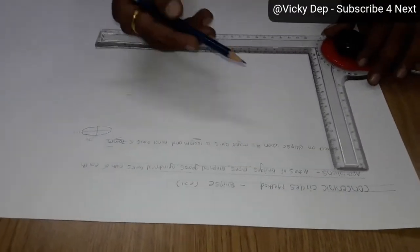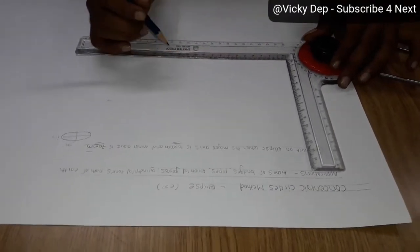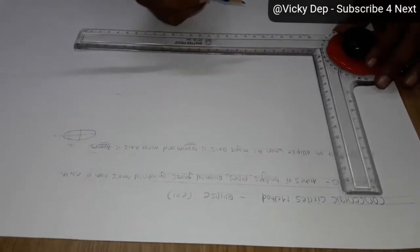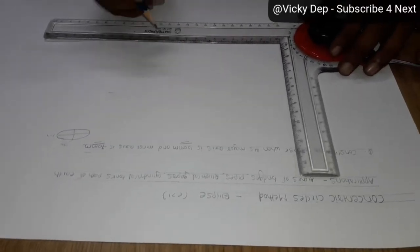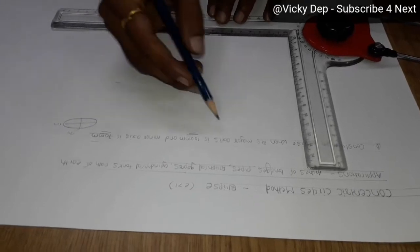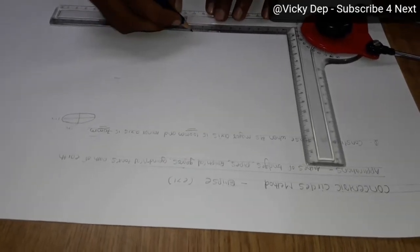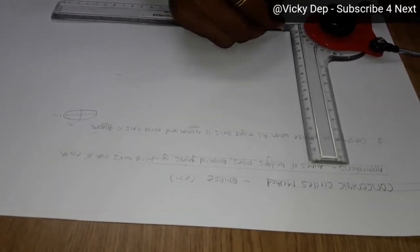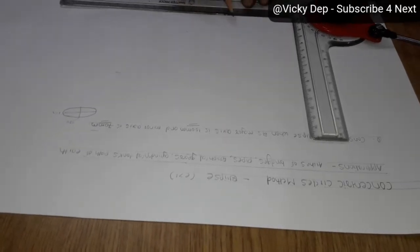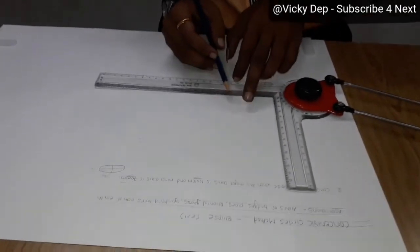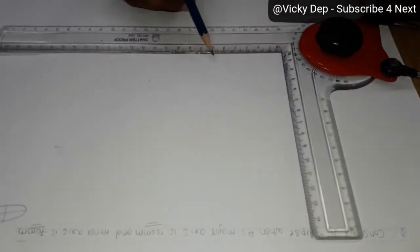Now I am going to draw this ellipse. Now see this. You have to draw a faint line here first of having the major axis is 100 mm. Is this visible?